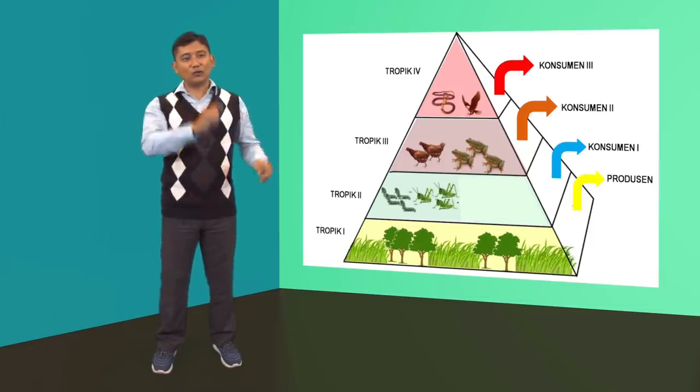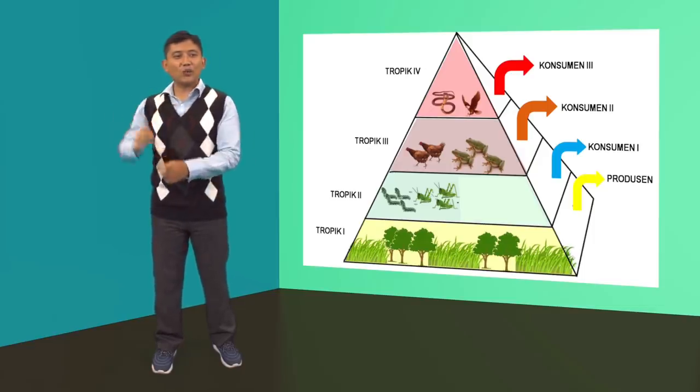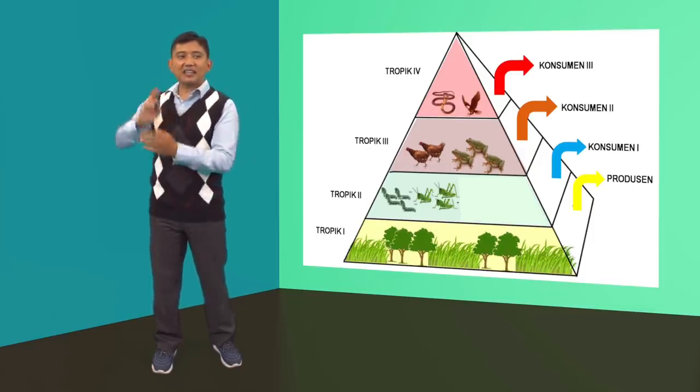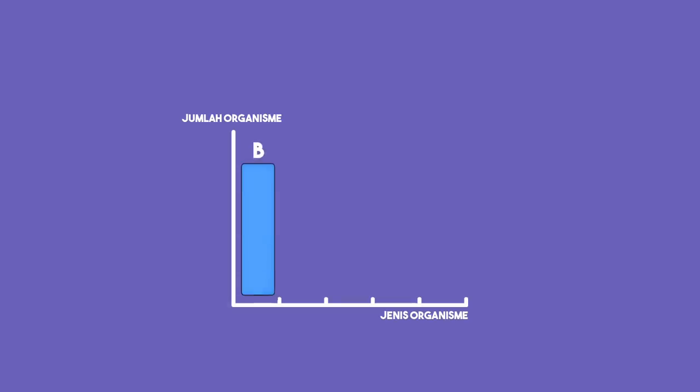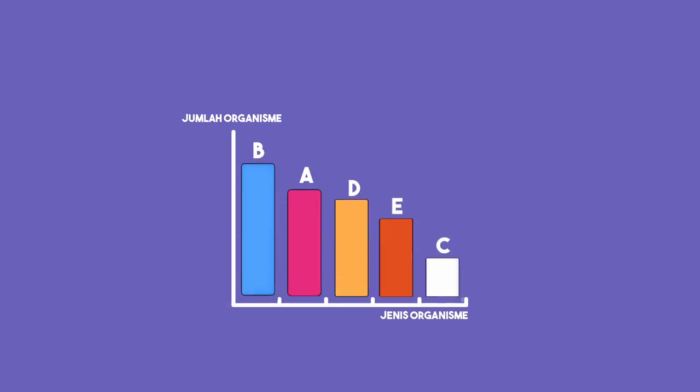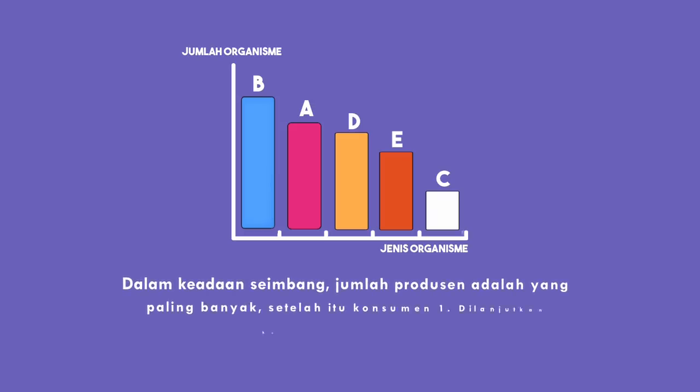Sobat XScience, bisakah kalian menjawabnya? Mari kita coba menjawab pertanyaan tadi. Dalam keadaan seimbang, jumlah produsen tentunya harus paling banyak dibandingkan dengan yang lainnya, kemudian diikuti oleh konsumen tingkat 1, konsumen tingkat 2, konsumen tingkat 3, dan seterusnya. Sehingga urutan yang tepat untuk membentuk suatu rantai makanan adalah B, A, D, E, kemudian C.